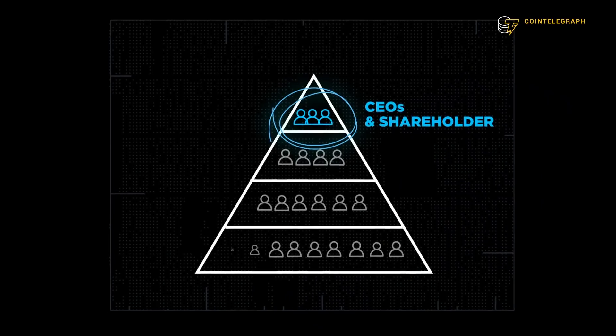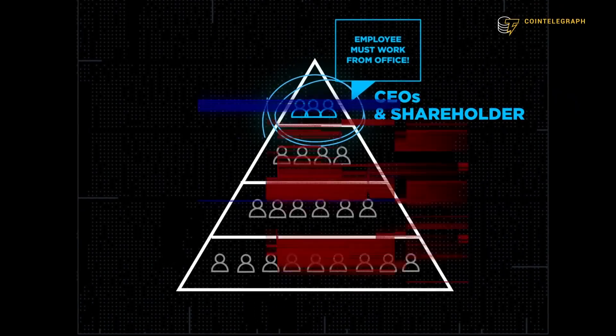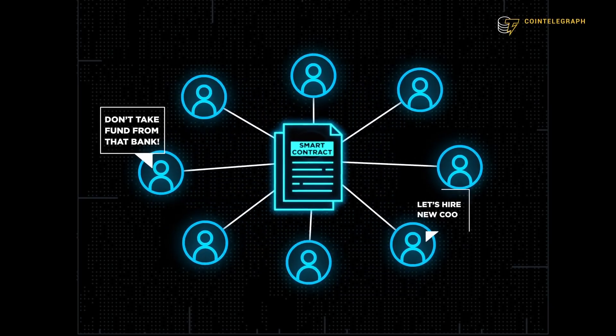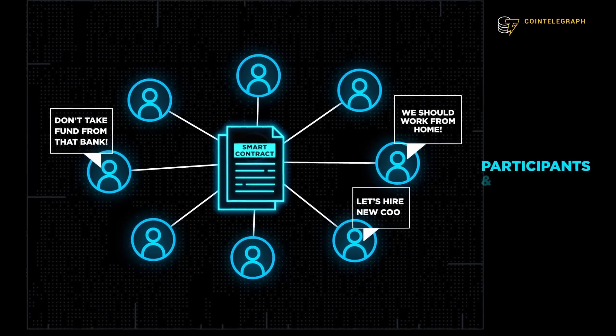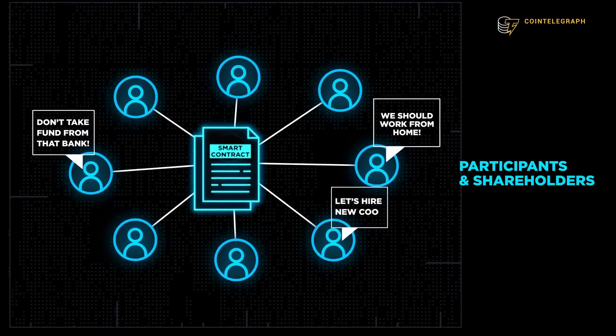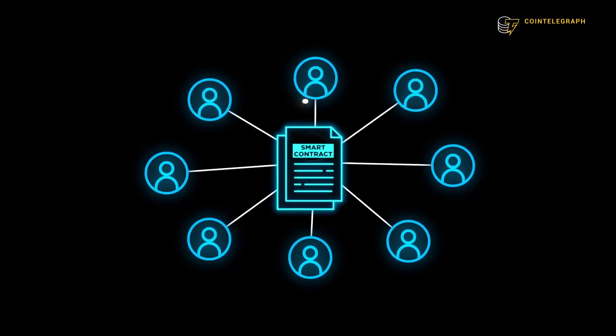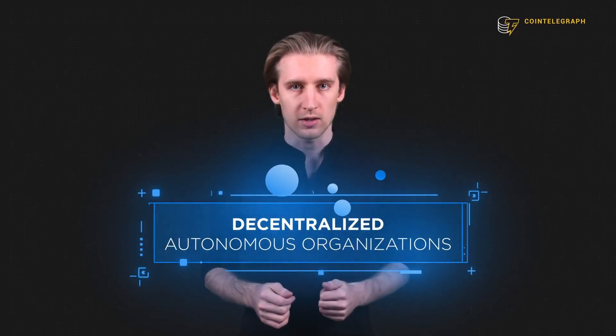Now let's get to the other goal of Web 3.0: deconstructing the tech conglomerates that control Web 2.0. Breaking up these giant companies can only be done through legislation and legal action. However, Web 3.0 provides an alternative to the typical company. Everyone knows the classic corporate pyramid with CEOs and shareholders at the top. But what if organizations were structured more like a flat circle where everyone was equal? Users could participate in the governance and operation of the organizations themselves, turning them into participants and shareholders, not just consumers or products. The structure would be governed by smart contracts so everyone plays by the same rules. This is the premise for Decentralized Autonomous Organizations, or DAOs.